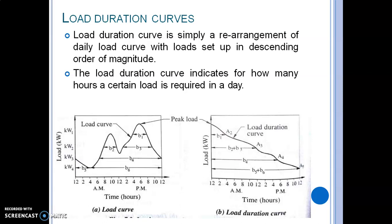At load level kilowatt two on the load curve, the intercepts b2 and b3 are plotted on the load duration curve as b2 plus b3. Similarly, b5 and b6 are combined. This is how the load duration curve is constructed from the daily load curve. Now we move on to different terms and definitions.